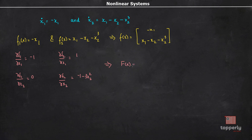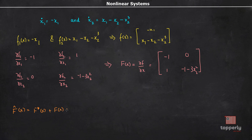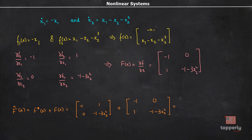Therefore, the Jacobian matrix F(x) = ∂f/∂x = [[-1, 0], [1, -(1 + 3x₂²)]]. So we can calculate F̂(x) = F*(x) + F(x), which is [[-1, 1], [0, -(1+3x₂²)]] + [[-1, 0], [1, -(1+3x₂²)]], giving F̂(x) = [[-2, 1], [1, -(2 + 6x₂²)]], which equals -1 times [[2, -1], [-1, 2 + 6x₂²]].